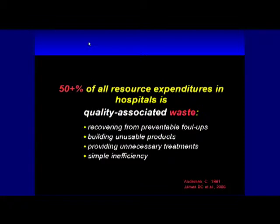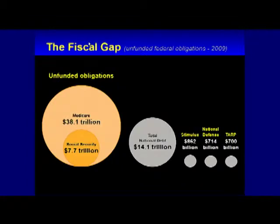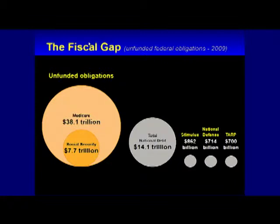Why is that important? It has to do with what's called the fiscal gap — the difference between the commitments the United States government has made to the people of this country and their funding. This isn't the total cost; this is just the gap. The best analyst in Washington, the actuary at the Medicare program at CMS, puts that gap at $211 trillion using what's called a net present value — meaning you massively discount the costs as you go out in time. How much would you need now for that money down the road?